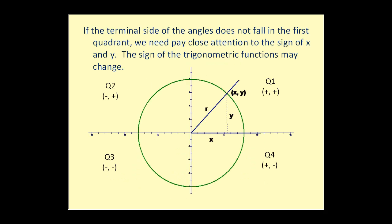If the terminal side does not fall in the first quadrant, pay close attention to the signs of x and y, because they affect the signs of the trigonometric functions. Both x and y are positive in the first quadrant, so all trig functions are positive. In the second quadrant, x is negative and y is positive, affecting cosine, tangent, and their reciprocals. In the third quadrant, both x and y are negative, affecting sine, cosine, and their reciprocals.